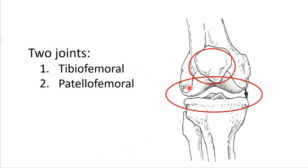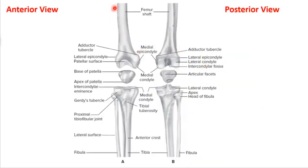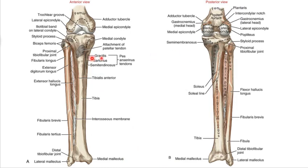The two primary joints we'll be exploring are the patellofemoral joint — how the patella interacts with the femur — and the tibiofemoral joint, so how the tibia plateau interacts with these femoral condyles. You can see the femur, the tibia, and this relationship. There's quite a bit of musculature that crosses the joint here. This dashed line represents the joint capsule — that's what's behind the capsule of the synovial fluid.